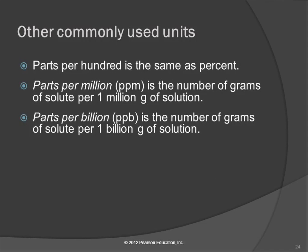There are some other commonly used units that are related to mass by mass percent. Parts per hundred, that is exactly the same as percent. Percent means per hundred. Parts per million is generally abbreviated ppm. It's the number of grams of solute per one million grams of solution. Parts per billion is grams per billion grams.